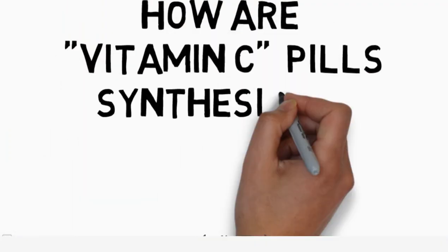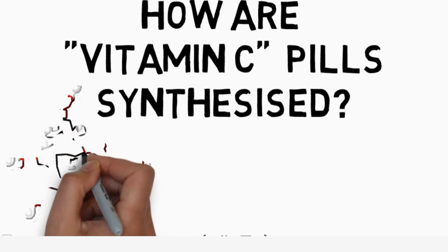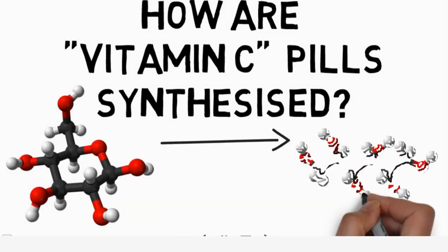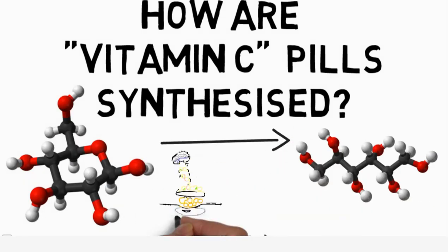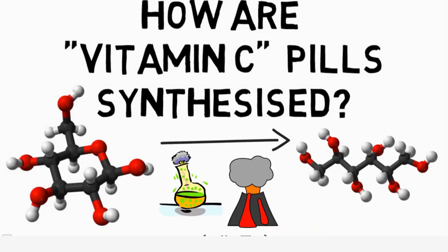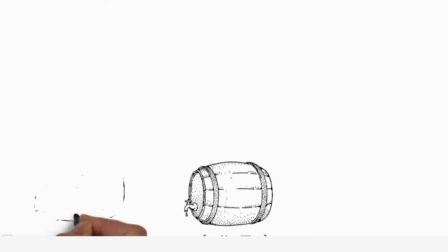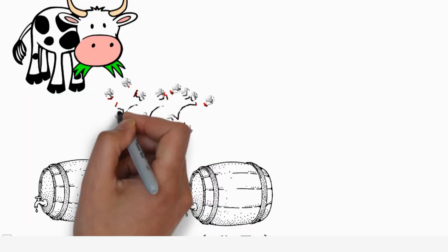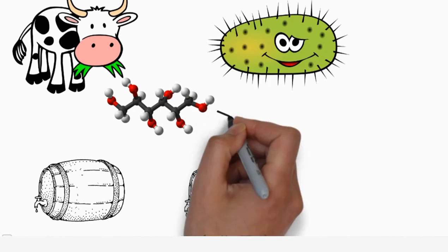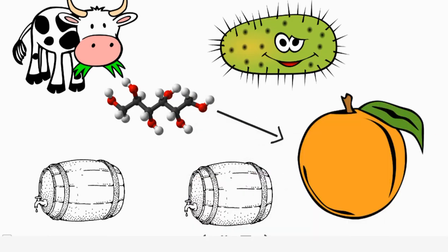How are vitamin C pills synthesized? We take glucose and convert it into sorbitol using a chemical reaction at high temperature. Then there are two fermentation steps wherein we feed sorbitol to microorganisms which convert the sorbitol to vitamin C.